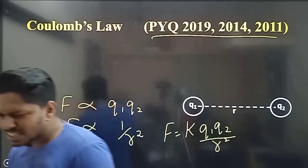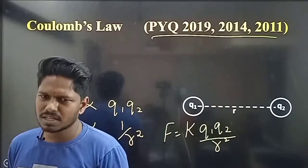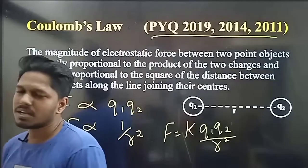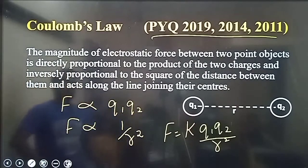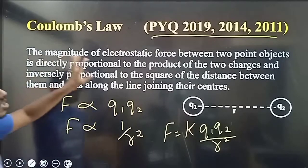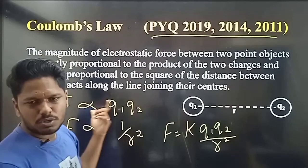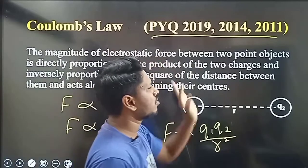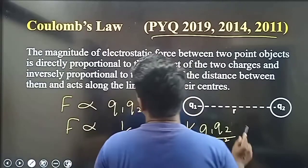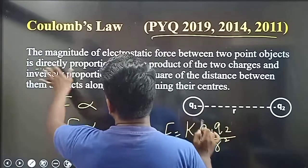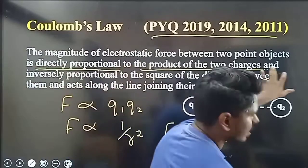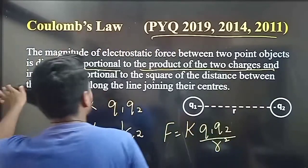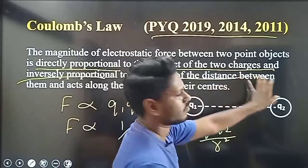What is Coulomb's law? The magnitude of the electrostatic force is directly proportional to the product of the charges and inversely proportional to the square of the distance between them.